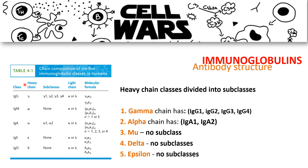The different classes of antibodies are based on the heavy chain structure: gamma for IgG, mu for IgM, alpha for IgA, epsilon for IgE, and delta for IgD. IgG has four subclasses and IgA has two subclasses. The light chain of antibodies can be either kappa or lambda. Note that IgM, IgD, and IgE have no subclasses.